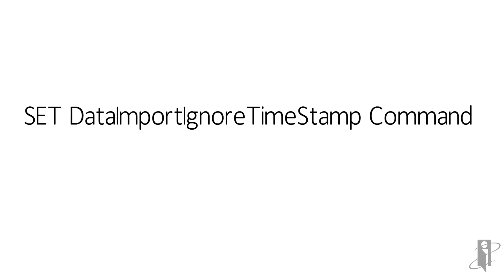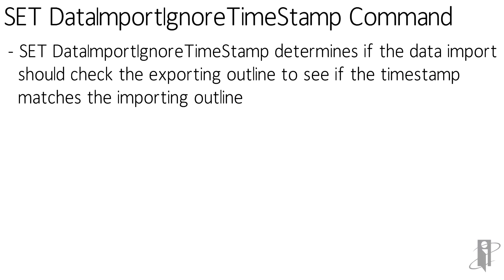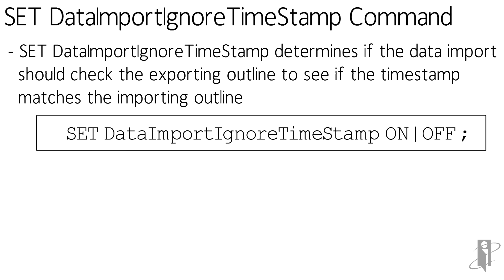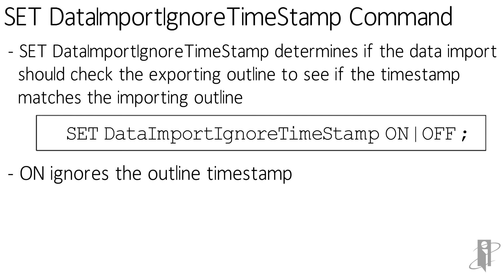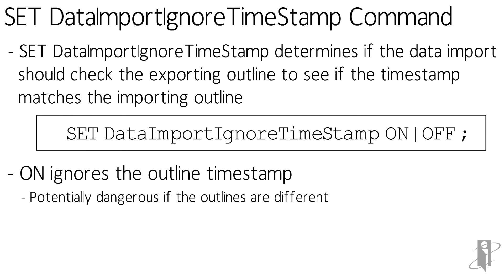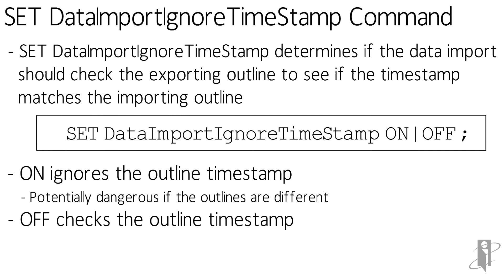Data import ignore data timestamp tells the data import whether it should bother checking the exporting outline to see if the timestamp exactly matches the importing outline. On says ignore the outline timestamp — maybe you did a copy of it at some point. Be very careful, because if that older outline didn't have all the members the newer outline does and you try to do this, it's just going to mangle your entire data set. So make sure it really is the exact same copy — it's just that for some reason your timestamp is slightly different between the two. Off is the default, meaning it will check the outline date timestamp.